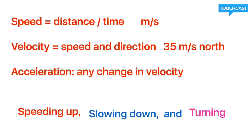First off, speed is going to be equal to distance divided by time. Think of miles per hour. The units are typically going to be meters per second or kilometers per hour. Speed would be, let's say, 35 miles per hour or 35 meters per second.